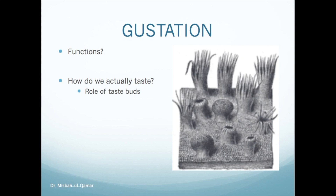Taste buds are oval bodies with a diameter of 50 to 70 microns. In adults, about 3,000 to 10,000 taste buds are present, while the number is more in children. In old age, many taste buds degenerate and the sensitivity of taste becomes weak. Interestingly, insects have taste organs in their feet, antenna, and even in their mouth parts.